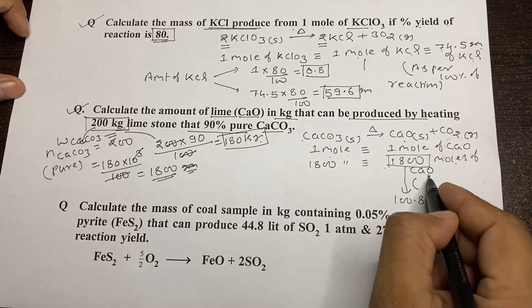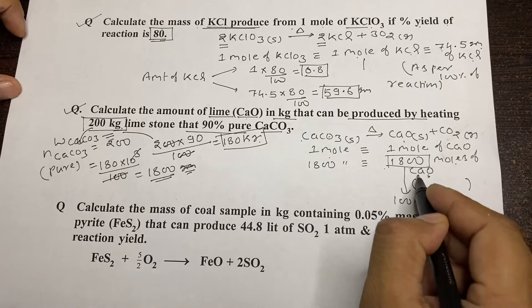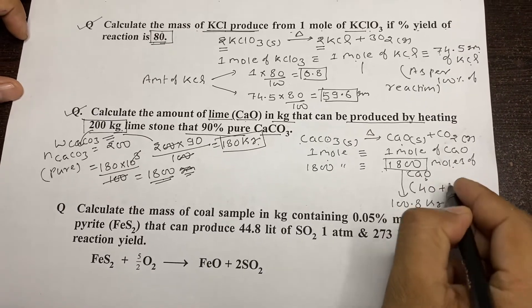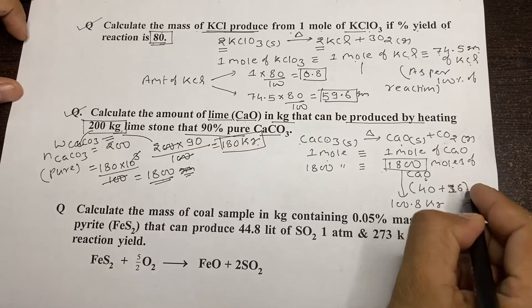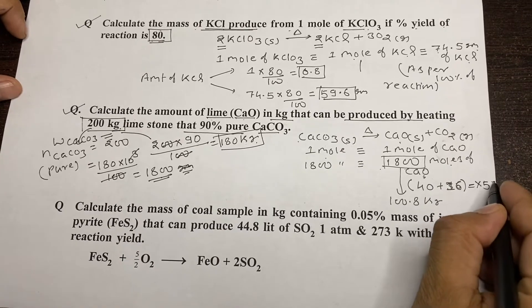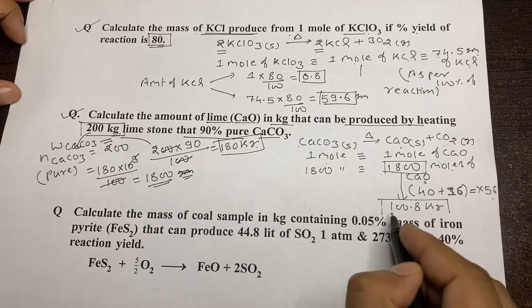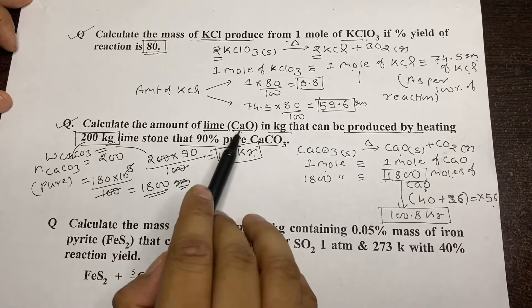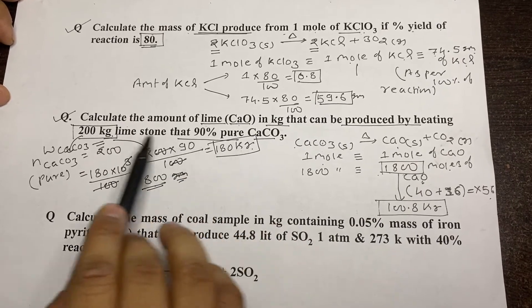The molecular mass of CaO: calcium is 40 and oxygen is 16, giving 56 g/mol. So we multiply 1800 moles by 56 to get the amount of lime (CaO) obtained from 200 kg of 90% pure calcium carbonate limestone.